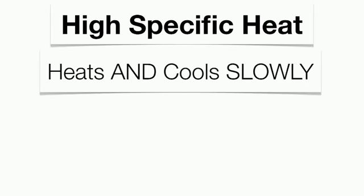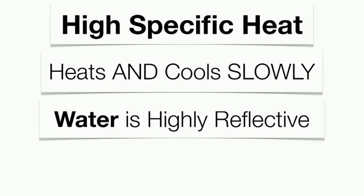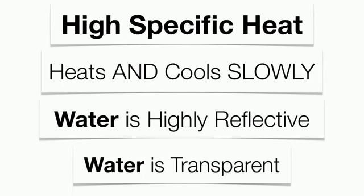Something with a high specific heat heats and cools extremely slowly — it needs a tremendous amount of heat energy to heat and cool off. Water has the highest specific heat of any substance on the planet. First, it's highly reflective, so it takes a long time for that energy to be absorbed, especially when water is reflecting the sun's energy off its shiny surface. And second, it's transparent — not only does the surface of the water get heated, the middle and even the bottom of the water column get heated as well. There's a tremendous volume that needs to get heated up, which is why water heats and cools very slowly.